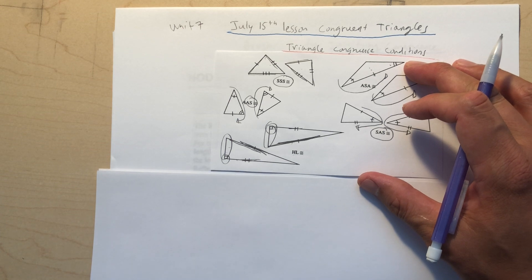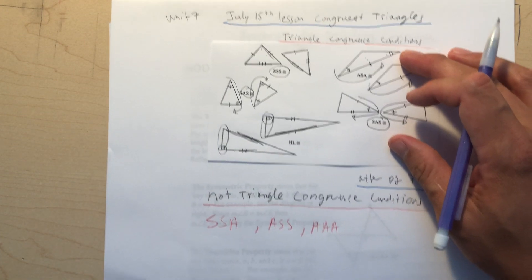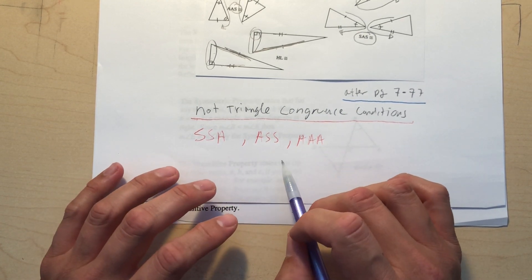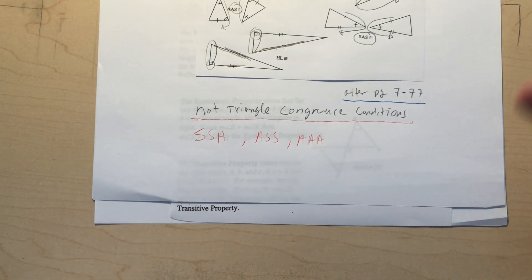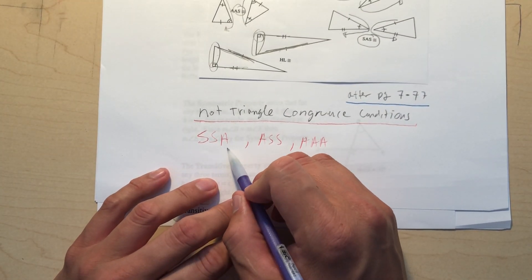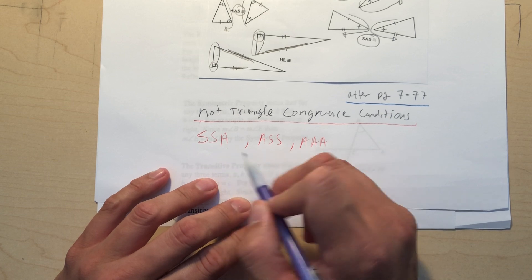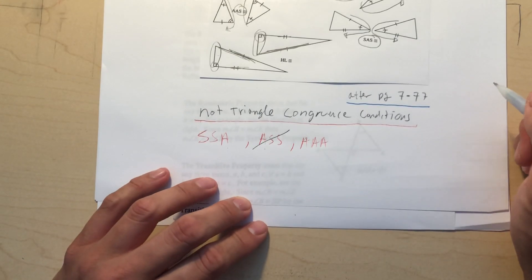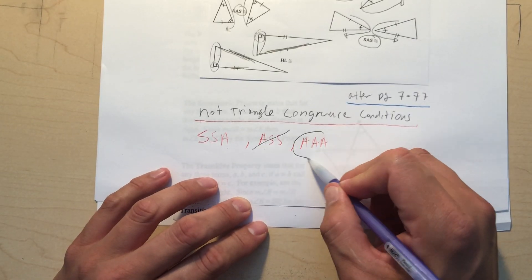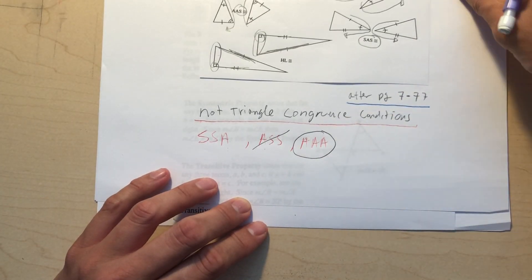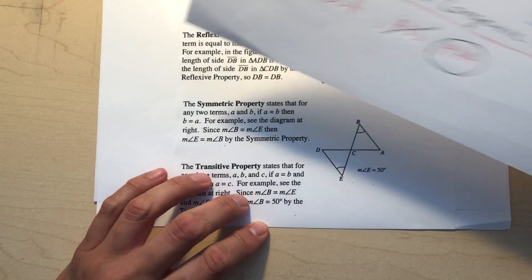A couple of things students get confused with: these three conditions cannot be used to prove congruence. Side-Side-Angle (SSA) doesn't work, and Angle-Angle-Angle (AAA) doesn't work either. So don't attempt to prove congruence using these three.